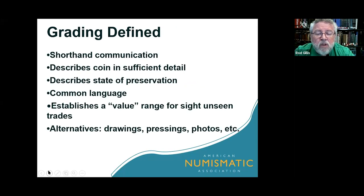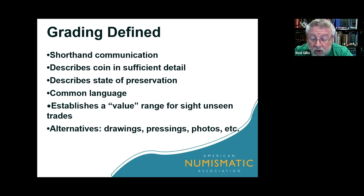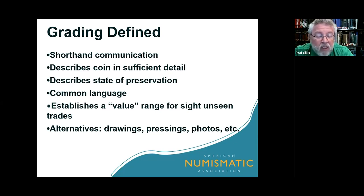Grading is really a shorthand communication — a language all its own. It describes coins in sufficient detail, describes a state of preservation, and was developed to become a common language, although it wasn't always that way. It establishes a value range for sight-unseen trades. Over time there were alternatives to actual photographs: drawings, pressings, and such — and so grading has developed over time.